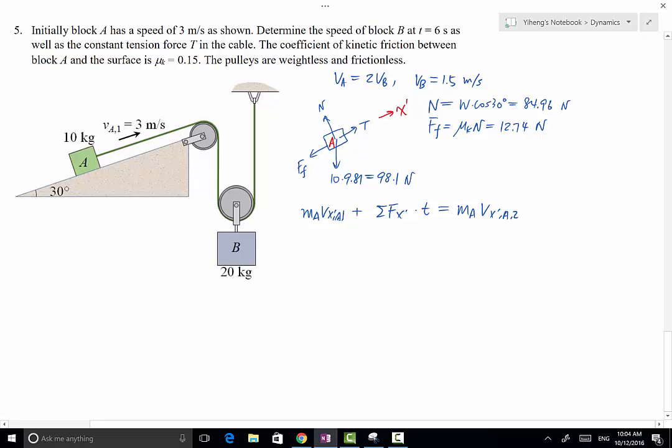Plus total force along the X' direction, we have T, which is unknown, minus FF, 12.74. In this case, normal force does have, sorry, weight force does have a component along the X' direction. Normal force doesn't, normal force is along the Y' direction, which is perpendicular to X' direction. But weight force does have a component of 98.1 times sine 30 degree. So that's the total force along the X' direction, times the time of 6 seconds, that equals the mass 10 times Vx' A2.